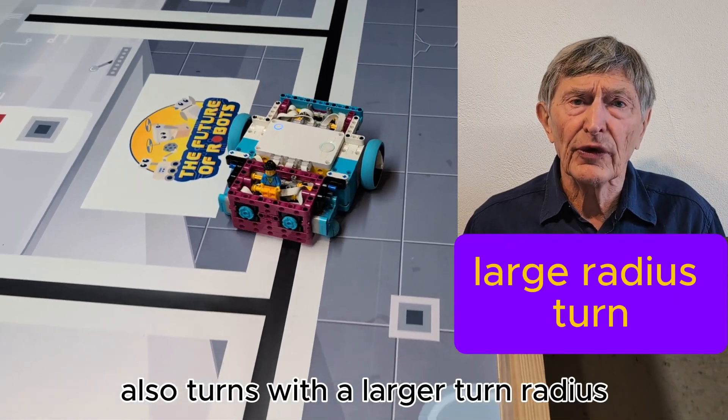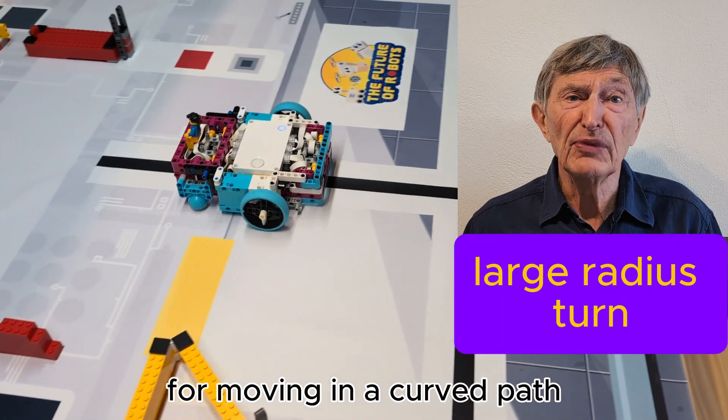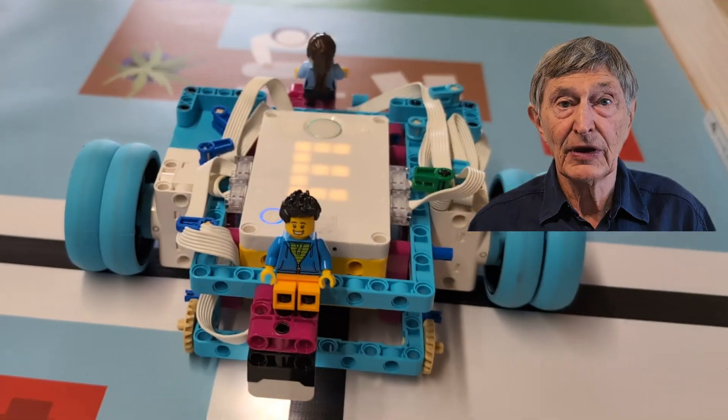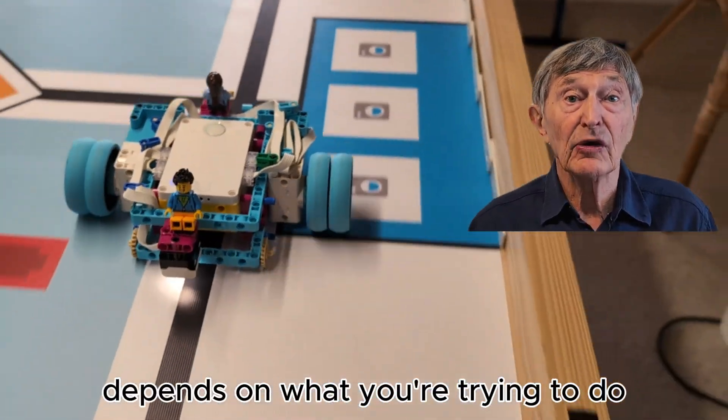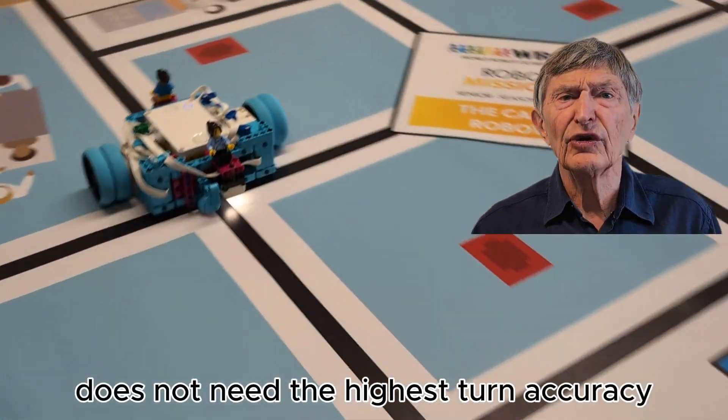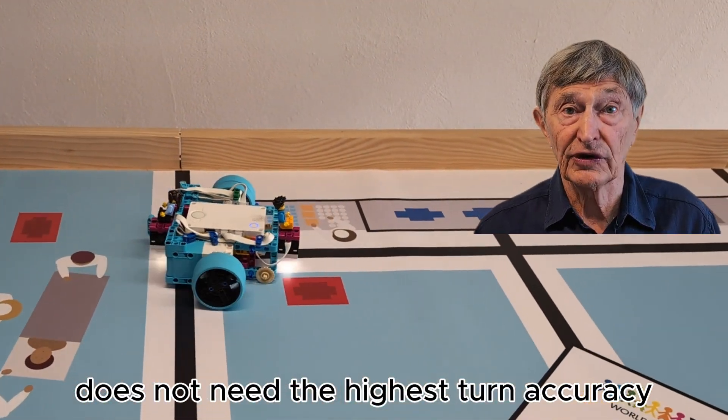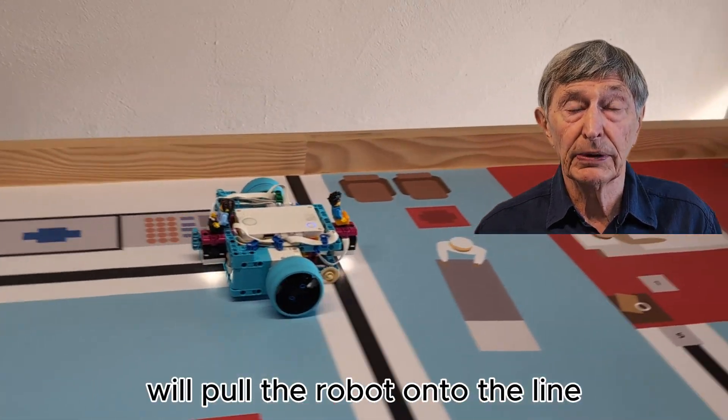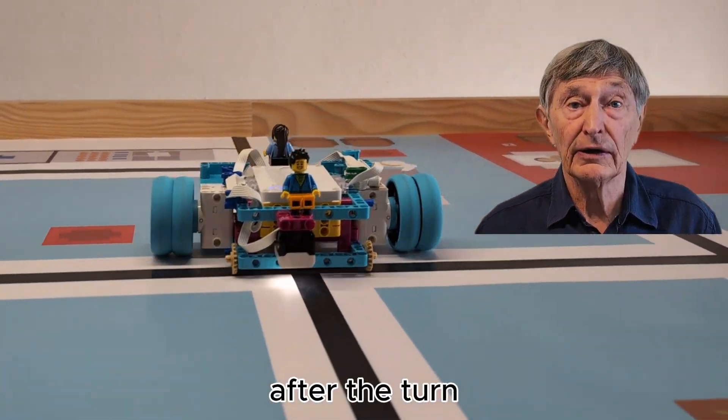Also, turns with a larger turn radius for moving in a curved path. Which turn you use depends on what you are trying to do. Line following does not need the highest turn accuracy as the line follower will pull the robot onto the line after the turn.